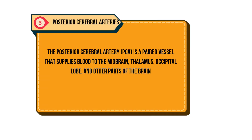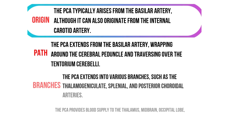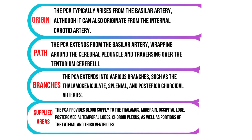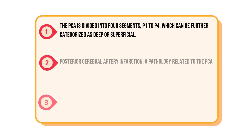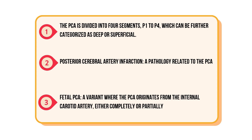The posterior cerebral arteries, or PCA, are a paired vessel that supplies blood to the midbrain, thalamus, occipital lobe, and other parts of the brain. The PCA typically arises from the basilar artery, although it can also originate from the internal carotid artery. It wraps around the cerebral peduncle and traverses over the tentorium cerebelli. The PCA extends into various branches such as thalamogeniculate, splenial, and posterior choroidal arteries, providing blood supply to the thalamus, midbrain, occipital lobe, posterior medial temporal lobes, choroid plexus, and portions of the lateral third ventricles. The PCA is divided into four segments, P1 to P4, which can be further categorized as deep and superficial. Related pathologies include posterior cerebral artery infarction and fetal PCA, a variant where the PCA originates from the internal carotid artery either completely or partially.